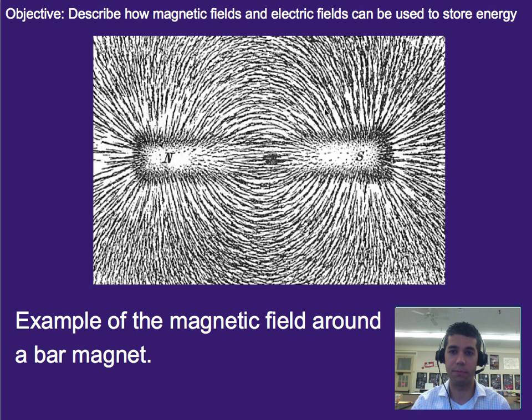We also looked at magnetic fields, namely that if you have a magnet, it creates a magnetic field and that is what causes other magnetic things to be attracted or repelled.